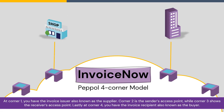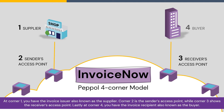This is how a four corner model looks like. At corner one, you have the invoice issuer, also known as the supplier. Corner two is the sender's access point, while corner three shows the receiver's access point. Lastly, at corner four, you have the invoice recipient, also known as the buyer.